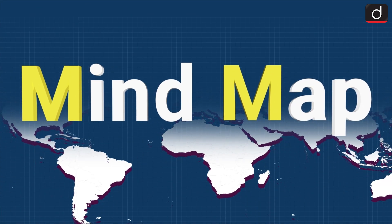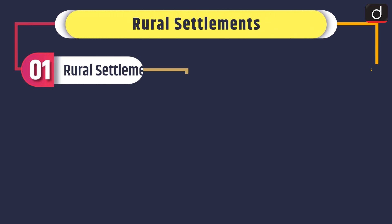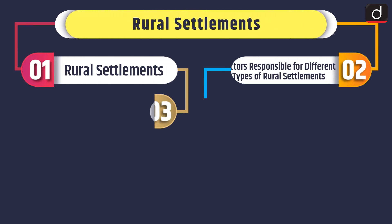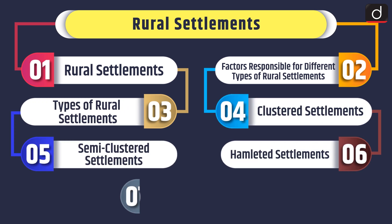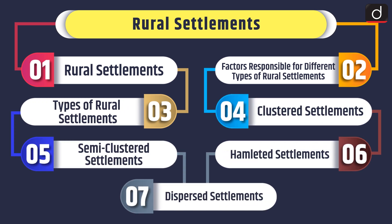Hello everyone, welcome to another episode of Mind Map. Today's topic of discussion is Rural Settlements. We will discuss rural settlements, then factors responsible for different types of rural settlements, types of rural settlements, clustered settlements, semi-clustered settlements, hamleted settlements, and lastly dispersed settlements.